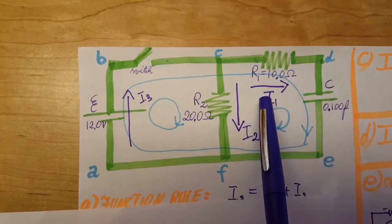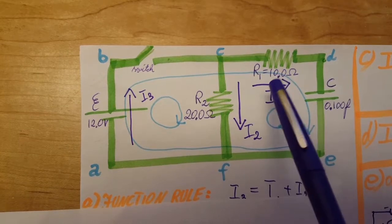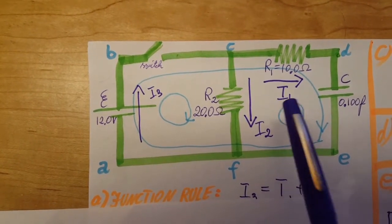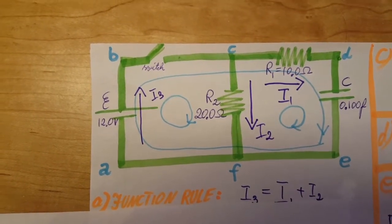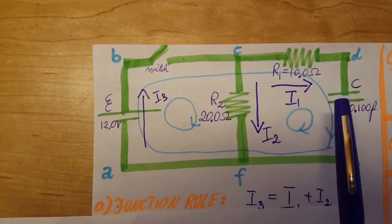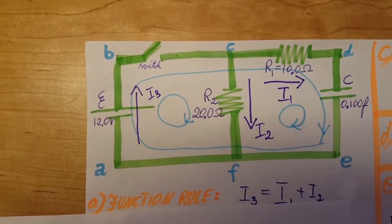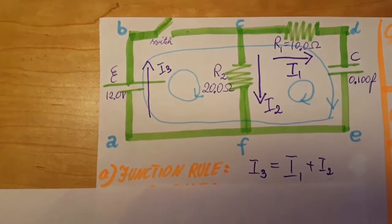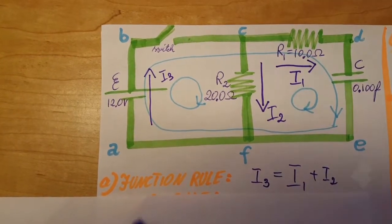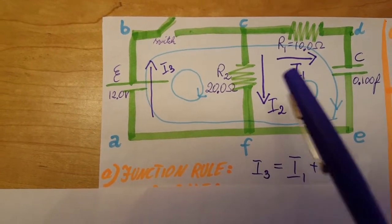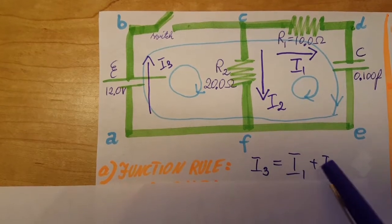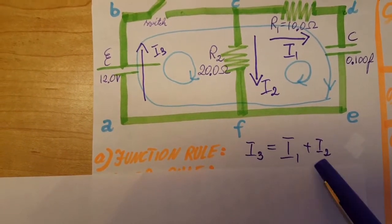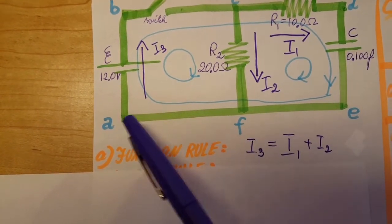If you guess a current direction wrong, the only difference is you'll get a negative value when you calculate it. A negative value tells you the direction was wrong — that's all. So for complicated circuits, don't worry too much; just do your best. For the junction rule using this junction: i3 is going in, so we write i3 equals i1 plus i2 coming out. We could also use the other junction and get the same equation with i1 and i2 going in and i3 going out.